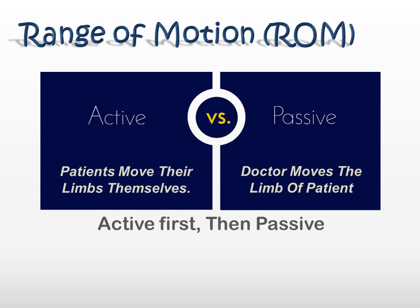When doing passive range of motion, assess the end feel. If the end feel is bony, it suggests a bony pathology like osteoarthritis or a fracture. But if the end feel is soft, it generally indicates a soft tissue pathology — the problem might be in the joint capsule, ligaments, tendons, or muscles. This will aid you in your differential diagnosis.